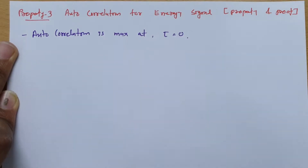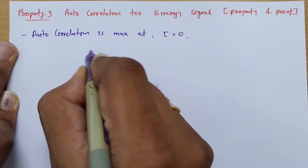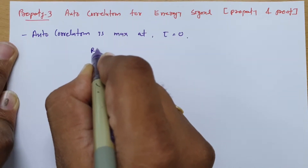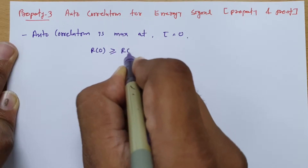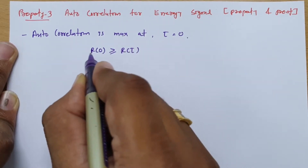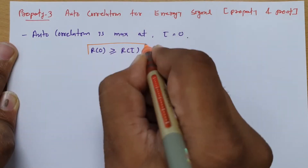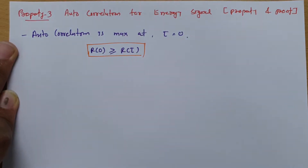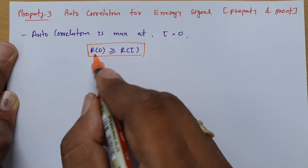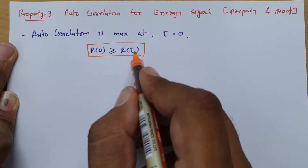As listed in the initial session, this third property is expressed as R(0) is greater than or equal to R(τ). This is the third property of autocorrelation for an energy signal. The meaning is that at tau equals zero, the autocorrelation is maximum — it will be greater than R(τ) for any other tau.